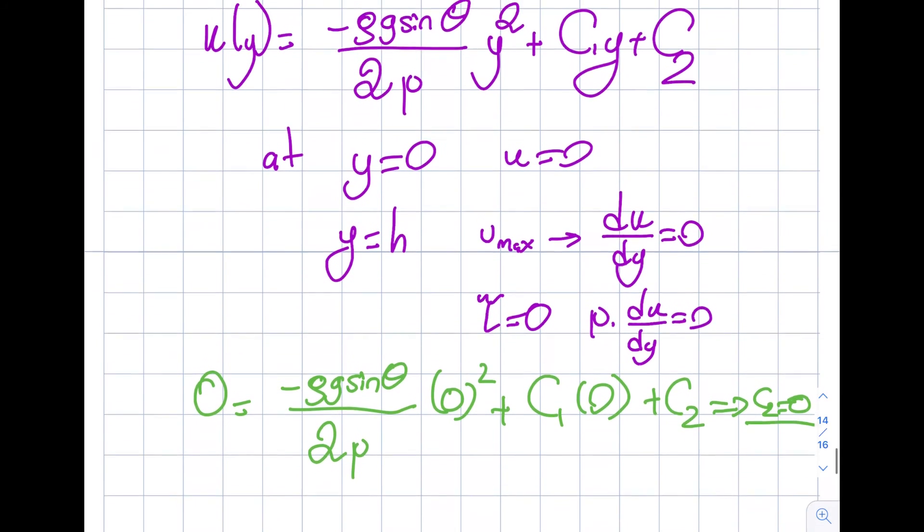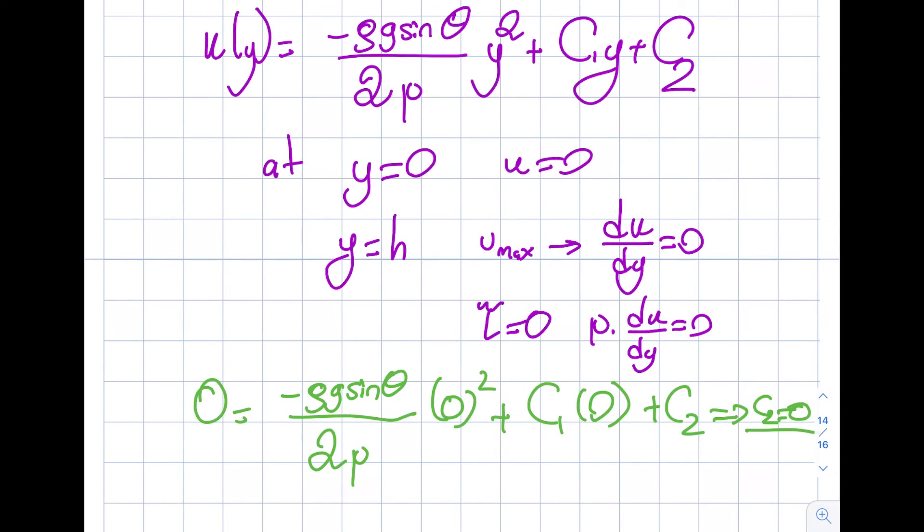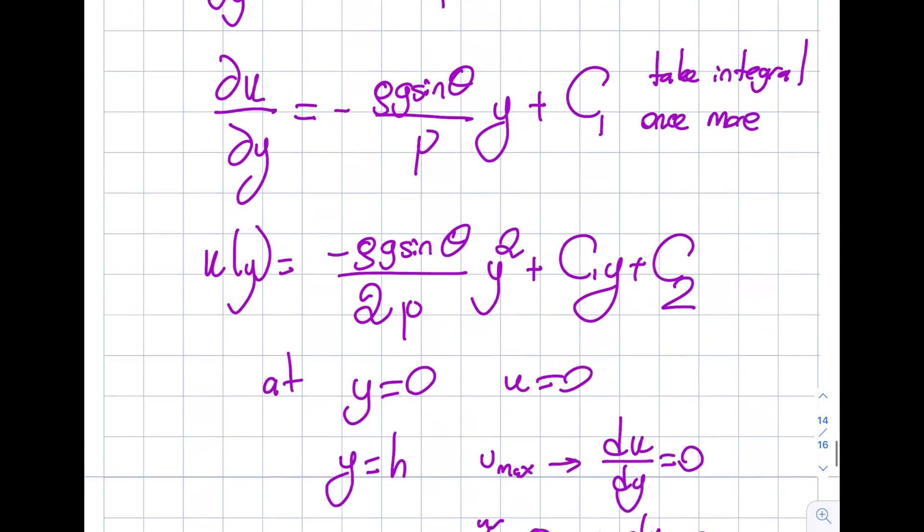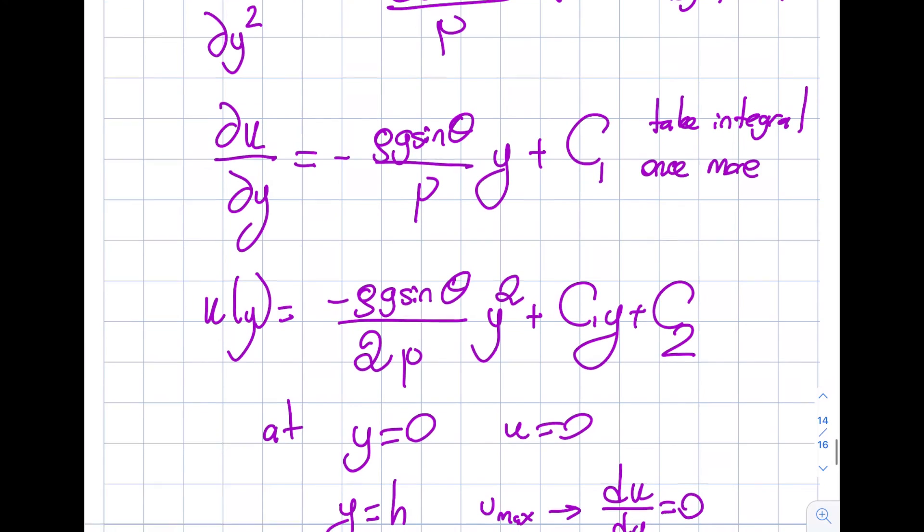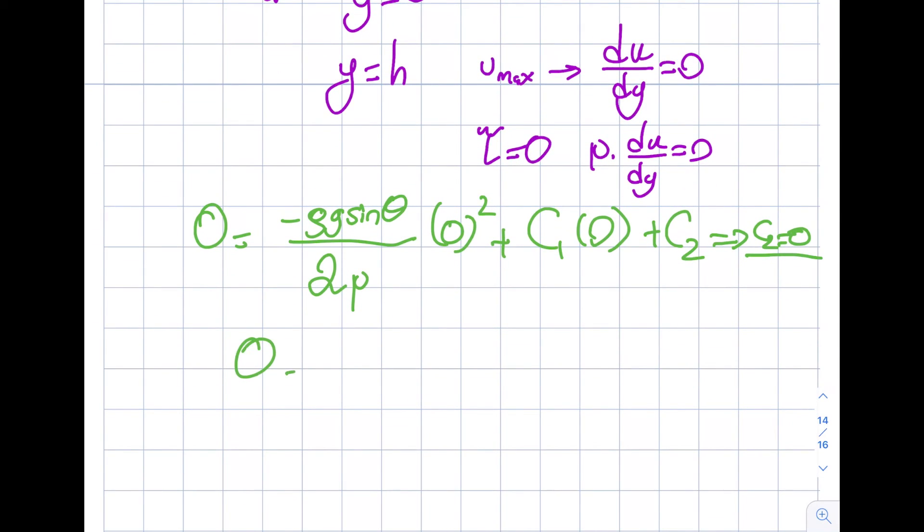From the second equation, then I need to use the derivative of this function with respect to y. But along the way I already have it. You see, I already have it. It's this, so that's what I'm gonna write. So I'm gonna write 0 will be equal to minus rho g sine theta divided by viscosity times h plus c1. So you can see from here that c1 needs to be rho g sine theta divided by viscosity times h.